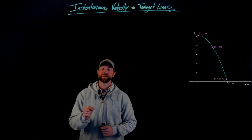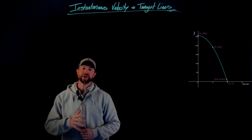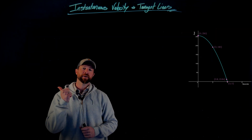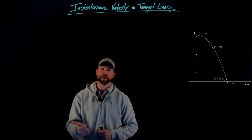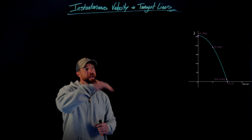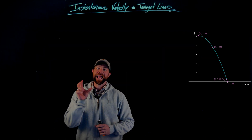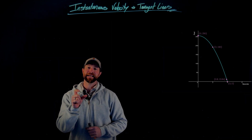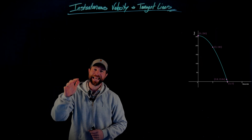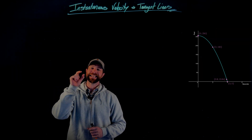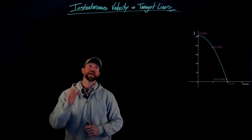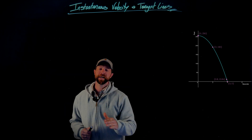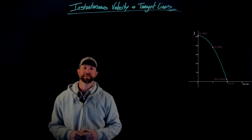Hey, welcome back. In this video, we're going to build off the concepts in our previous discussion. In that discussion, we talked about the average velocity of this helicopter that was falling from the sky and the slope of tangent lines. We're going to take that idea and go into instantaneous velocity at any second for this vehicle and the slope of tangent lines.